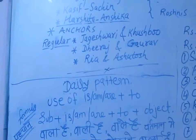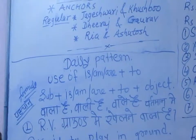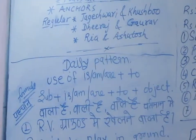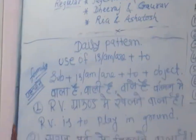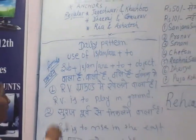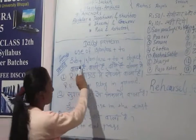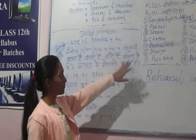I am studying in BSE from Government College of Bona Sani. Today's presentation is on the Derby Pattern formula. The subject is: a mass plus two plus object.